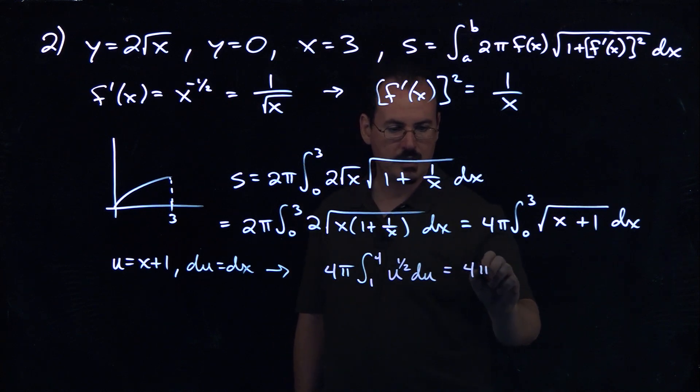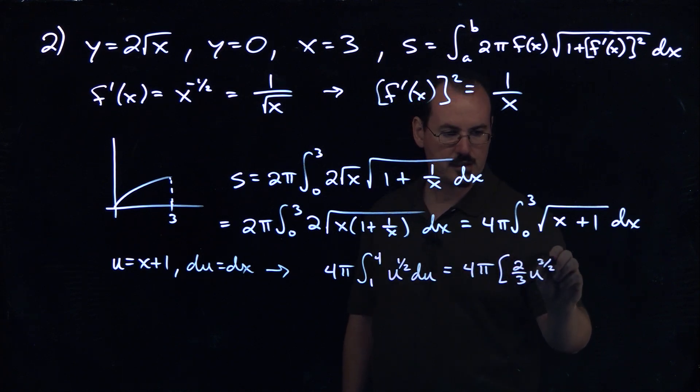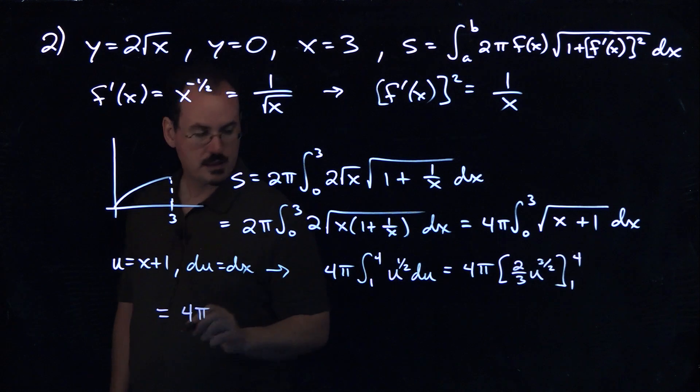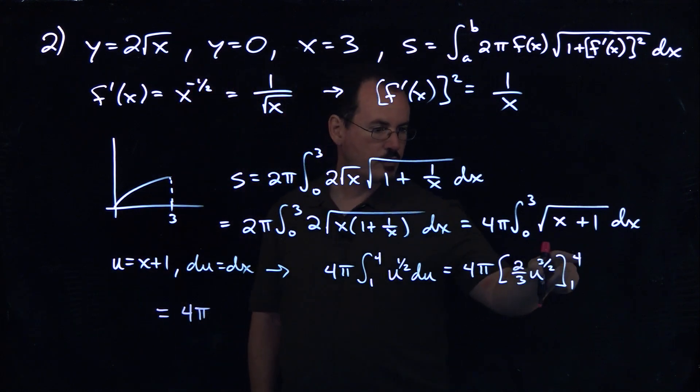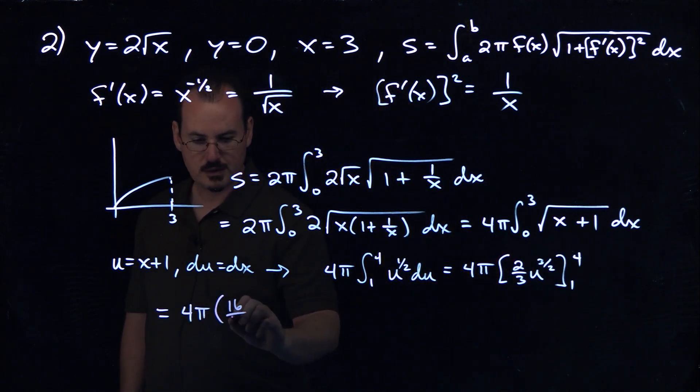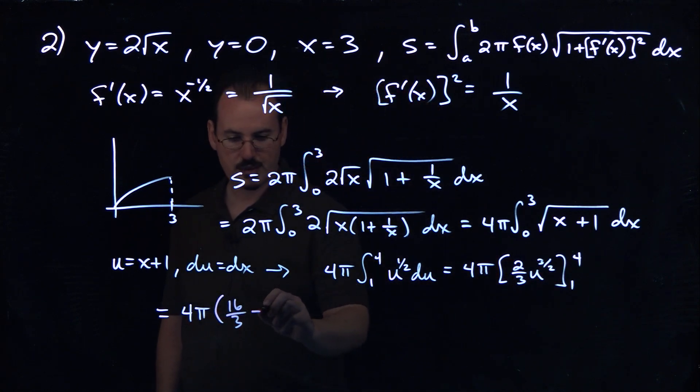So that's going to give us 4 pi times anti-derivative there, 2 thirds u to the 3 halves, evaluating this between 1 and 4. We will get from that 4 pi. If I plug in 4 there, the square root of 4 is 2 to the 3rd power is 8. So I'm going to get 16 thirds there. And when I plug in 1, I'll just get 2 thirds, so minus 2 thirds.